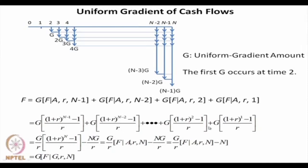We sum these and interest tables are also available for such factors: f given g, n, r. Once f is known you can find out p, equivalent a, and similar factors can also be determined for uniform gradient cash flows.